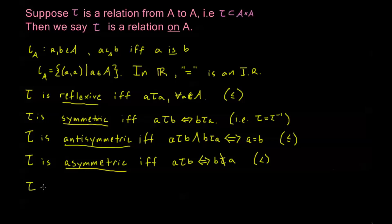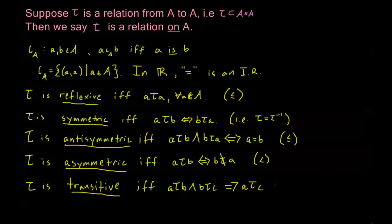Tau is called transitive if and only if A tau B and B tau C implies that A tau C. Less than is an example of a transitive relation: two is less than five and five is less than seven, so two is less than seven. Note this is only a conditional, not a biconditional — for example, one is less than seven but two is not less than one, so we can't go in the reverse direction. This transitive property is a one-directional statement.